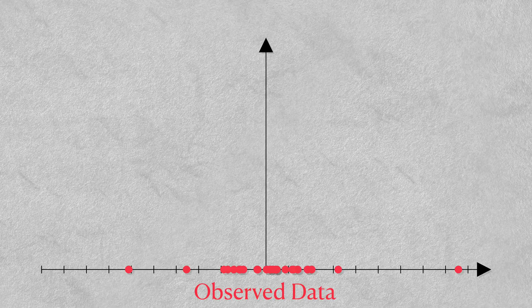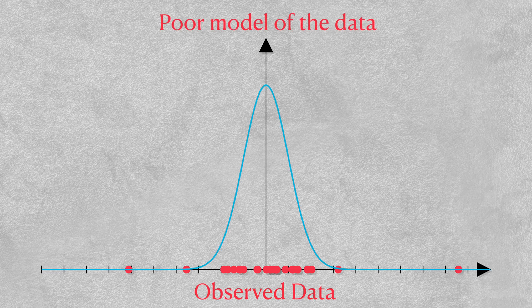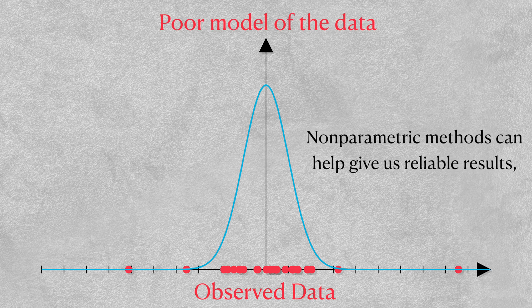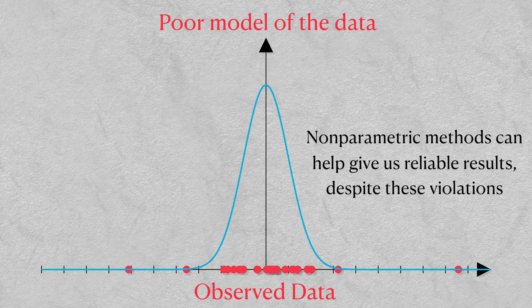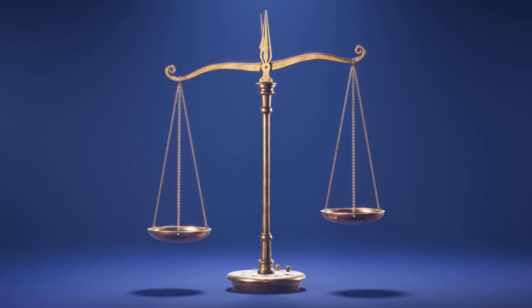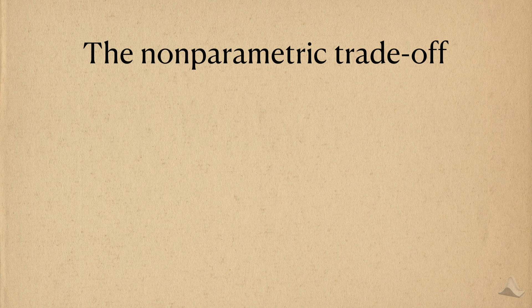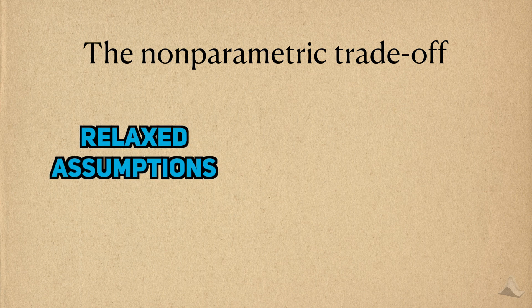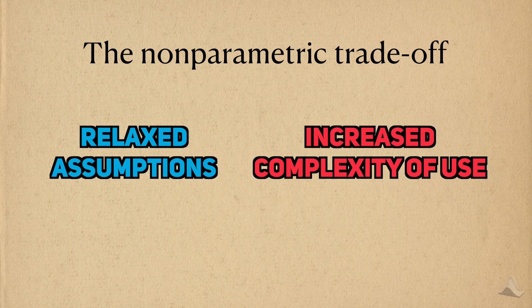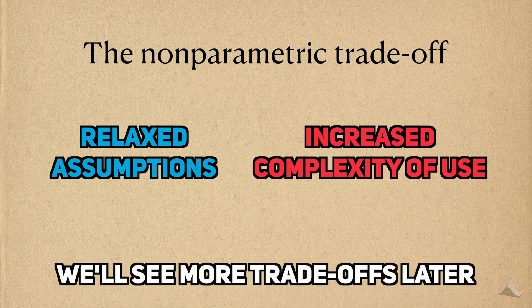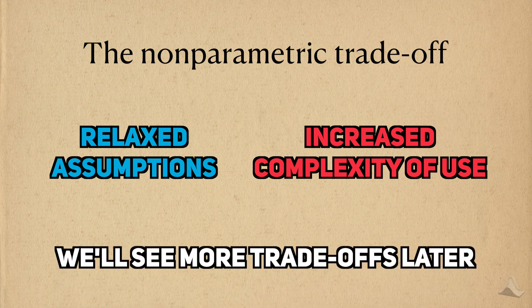Therefore, if we're dealing with a data situation that can violate these assumptions, then nonparametric methods can help give us reliable results in light of these violations. As with most things in statistics, there are trade-offs. Nonparametric statistics let us relax assumptions, but they can come at the expense of being more complicated or harder to explain to collaborators. Later on in the video, we'll see more of these trade-offs in action.